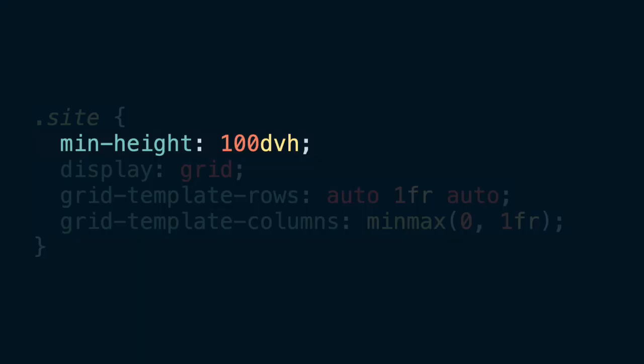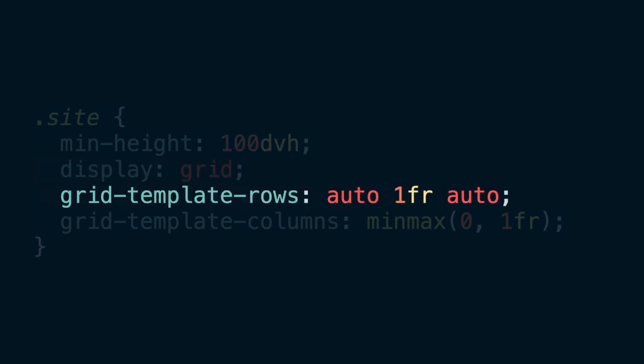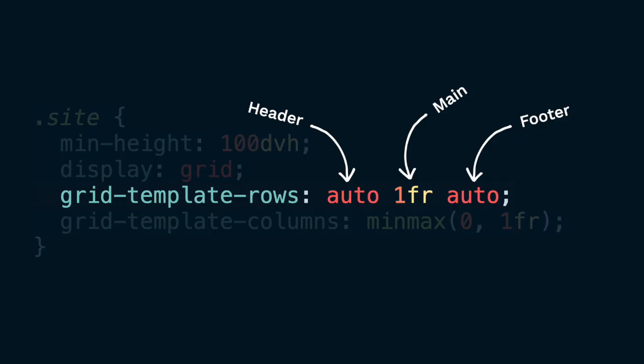Let's break the styles down because it's very important to understand what each line of code does. First, we set min-height of the site to 100% dynamic viewport height units, and we're not setting any height on the body or HTML elements. That's correct — with this approach it's not required, because the default height value of HTML and body is auto, meaning they will both expand as necessary to account for the height of the inner elements — in this case, the site element. Display grid makes the site element a grid. For the next line, we're creating three rows: header and footer are set to auto so they take as much space as necessary depending on content inside, and for the main content we set it to one fraction unit, which makes it expand if there is available space after it takes all the necessary space needed for its content.